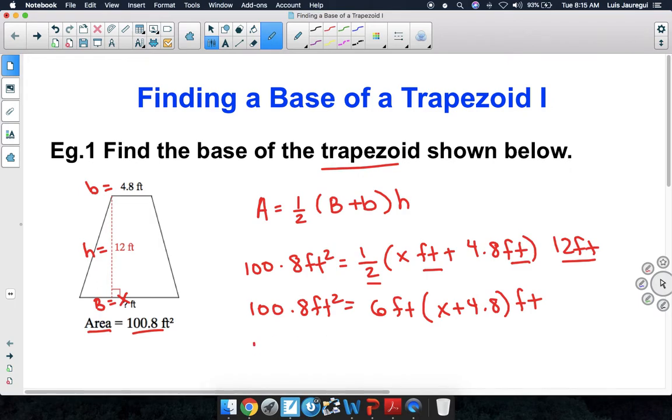Once again, trying to simplify this, we're going to get 100.8 square feet equals, I'm going to bring this feet over here, so we're going to have 6 feet squared times x plus 4.8.